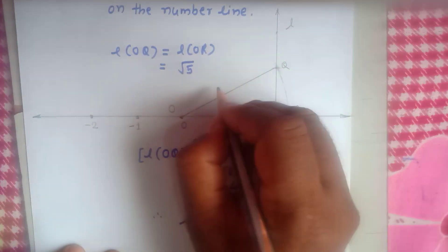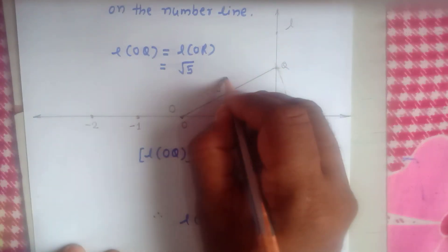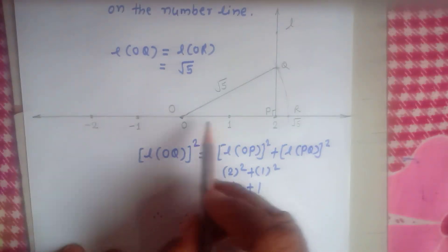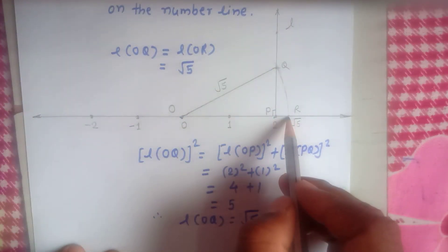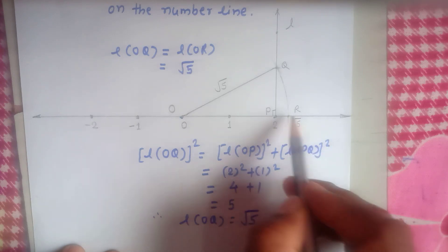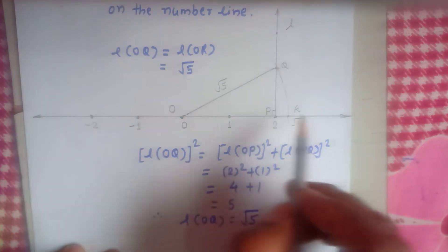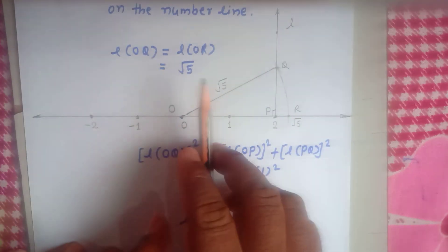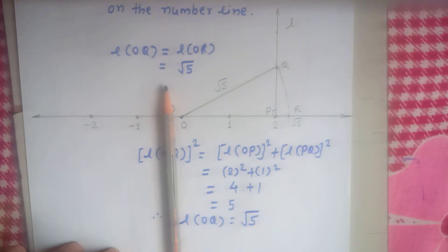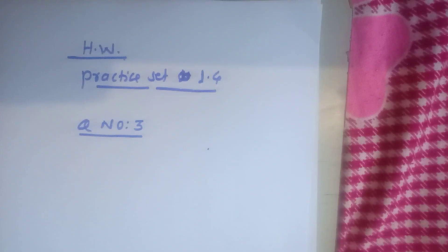Therefore OC equals root 5, since OQ and OR are radii of the same circle. Therefore point R indicates root 5 on the number line. Friends, you have homework: Practice set 1.4, Question number 3.